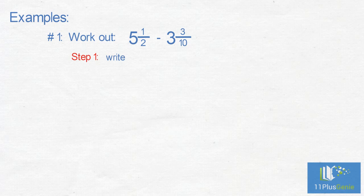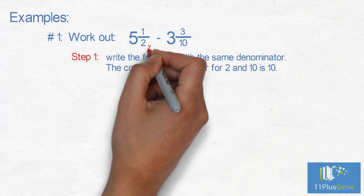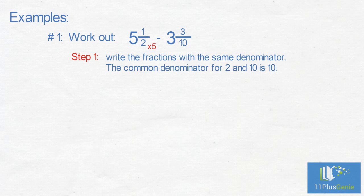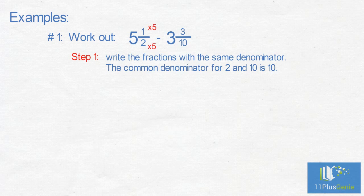Step 1: Write the fractions with the same denominators. The common denominator for 2 and 10 is 10. We must times the 2 by 5 to make it 10. We must also times the numerator by 5, which is 1 times 5, which equals 5. We now have 5 and 5 tenths, subtract 3 and 3 tenths.